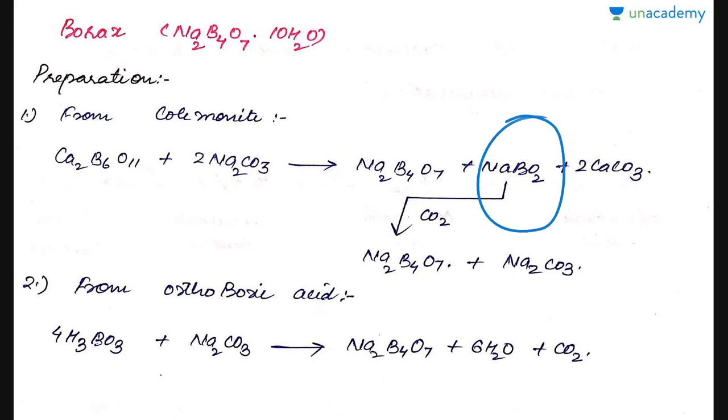Ca2B6O11 on treatment with sodium carbonate gives Na2B4O7 plus sodium borite NaBO2 plus calcium carbonate. When this sodium borite is treated with carbon dioxide we get Na2B4O7, that is borax, plus Na2CO3.